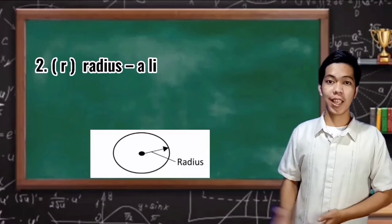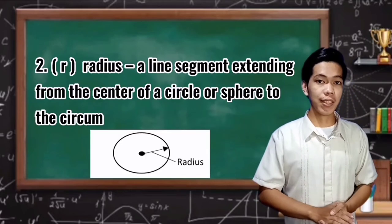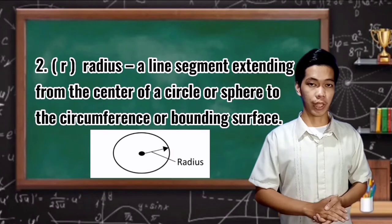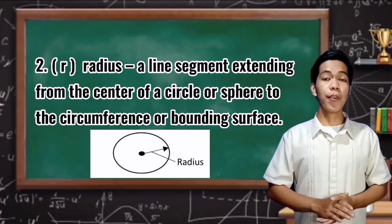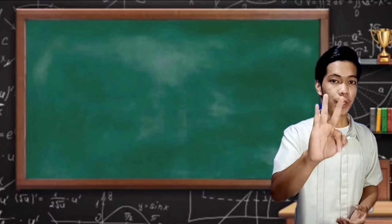Number 2: Radius. Radius is a line segment extending from the center of a circle or sphere to the circumference or bounding surface.